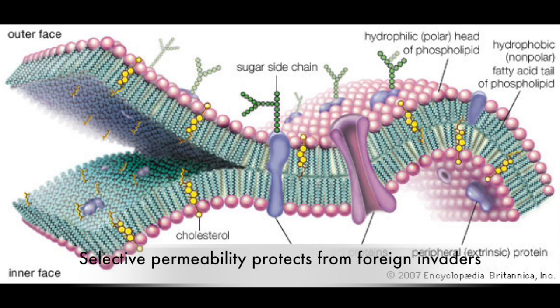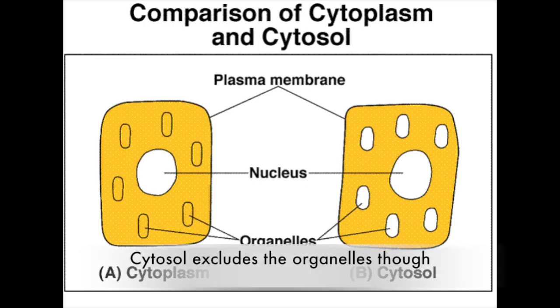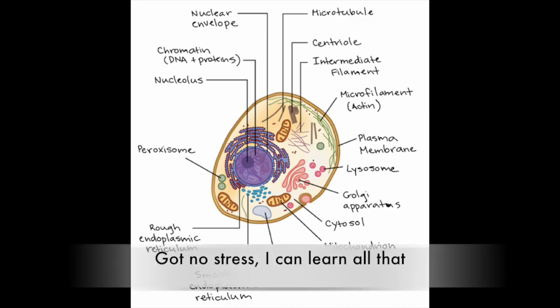Selective permeability protects from foreign invaders. Cytoplasm in the membrane contains the cytosol. Cytosol excludes the organelles though.